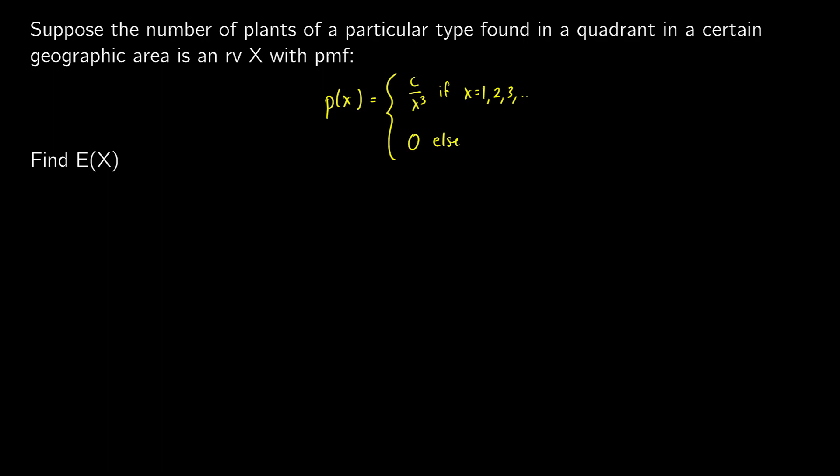So to find the expected value, what we're going to do is we're going to sum all of our x's from 1 to infinity. We're going to take x times the probability of x. Now this is going to be the same thing from x to infinity. x isn't going to change here, but we do know the probability at each point in x, which is going to be c over x cubed. This is nice because we can cancel a little bit here. So we're going to get the sum from x equals 1 to infinity of c over x squared.